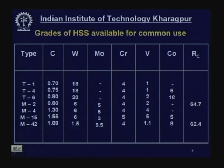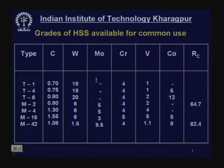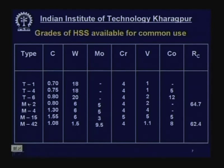During the Second World War there was a tremendous shortage of tungsten. Molybdenum was found to be a partial substitute — it is cheaper. A combination of 6% tungsten and molybdenum together was found almost equivalent to 18% tungsten. This created another grade called the M grade, which incorporates molybdenum.